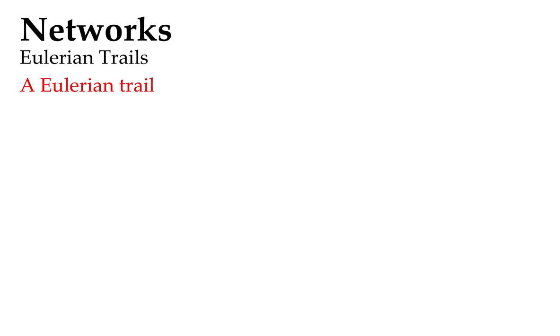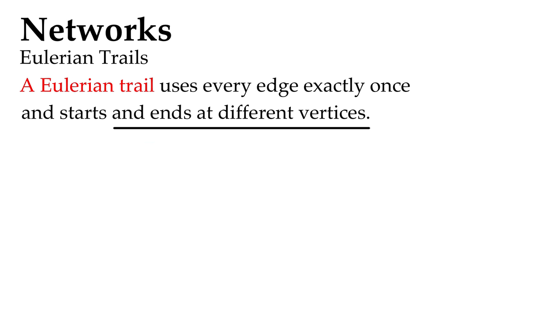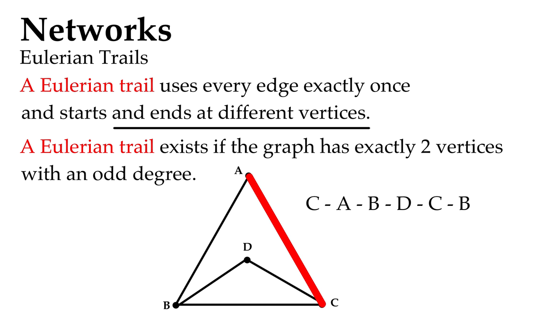Eulerian trails: a Eulerian trail uses every edge exactly once and starts and ends at different vertices. And it exists if it has exactly two vertices with an odd degree. So that was our example there: we can use every edge exactly once and not repeat any, starts and ends at different vertices. It started at C and ended at B there.